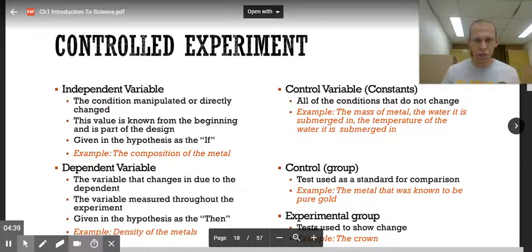Controlled experiments. What goes into a controlled experiment? You have independent variables, dependent variables, a control variable, a control group, and experimental group. An independent variable is the condition that can be changed or manipulated. This is the value that is known from the beginning and is part of the design of your experiment. It's the if part. So that's the composition of the metal.